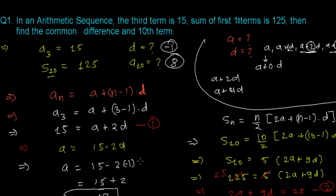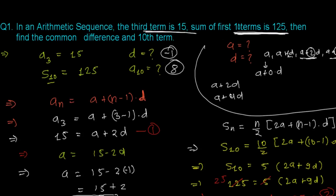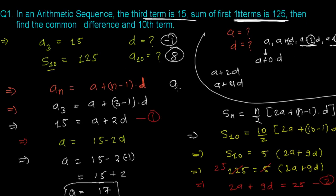Always try to formulate the given information into the formulas — first I put the formula for the third term, then for the sum of 10 terms. After formulating, always try to find the first term and the common difference. If you succeed in getting these two things, nothing can stop you from finding whatever the question asks. See you in the next video. Goodbye.